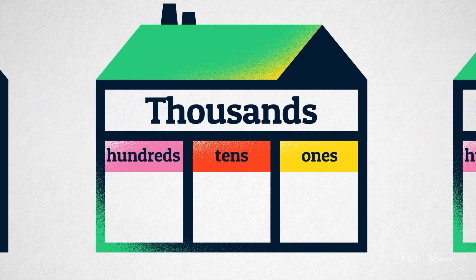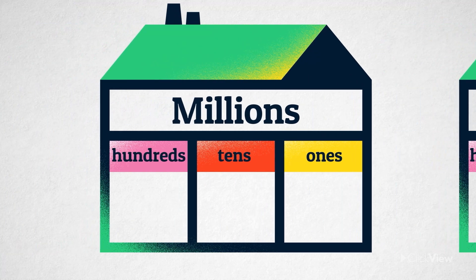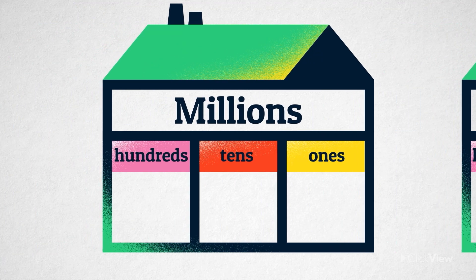The thousands house also has three rooms: a ones, a tens, and a hundreds room. This is the millions house. Can you see the pattern?